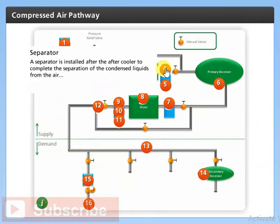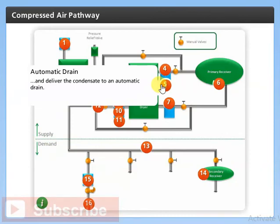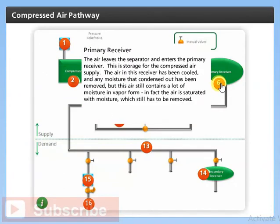A separator is installed after the aftercooler to complete the separation of the condensed liquids from the air, delivering the condensate to an automatic drain. The air leaves the separator and enters the primary receiver, which is storage for the compressed air supply. The air in this receiver has been cooled and condensed moisture removed, but it still contains a lot of moisture in vapor form — the air is saturated with moisture, which still has to be removed.